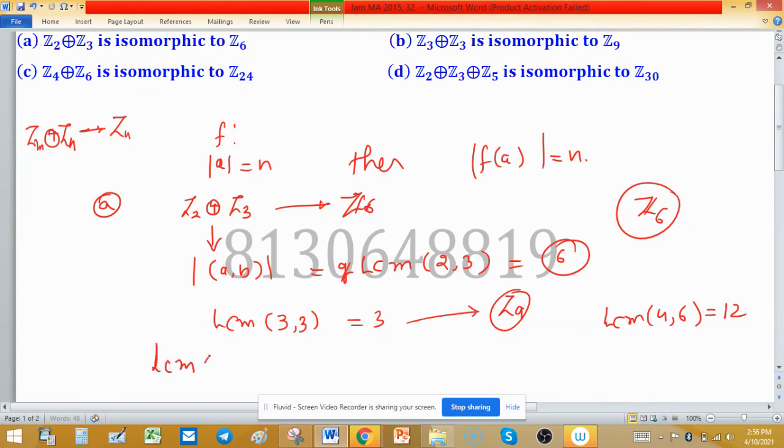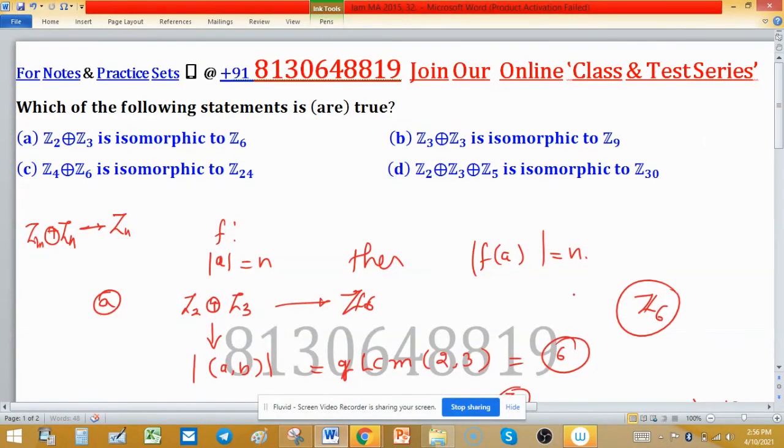In option D, we know that the LCM of 2, 3, and 5 is 30, and 30 is the order of Z30. So this is also an isomorphism. Therefore, options A and D are correct.